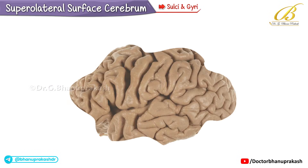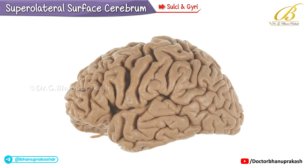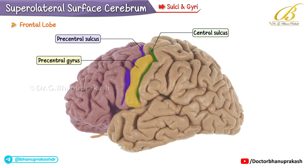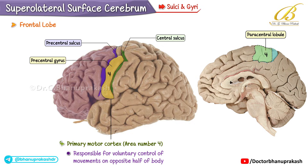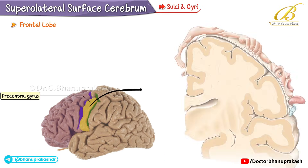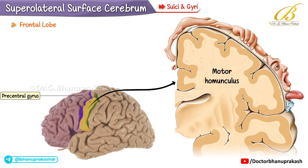Sulci and gyri: functional areas of the superolateral surface of the brain. In the frontal lobe, the precentral sulcus runs parallel to and in front of the central sulcus. The precentral gyrus, located between the precentral and central sulci, contains the primary motor cortex (functional area 4). It extends medially up to the paracentral lobule and is responsible for voluntary control of movements on the opposite half of the body. The motor homunculus represents a topographic map of body parts within the precentral gyrus, with body parts of higher sensitivity or fine motor skills represented in larger areas, progressing from medially to laterally.